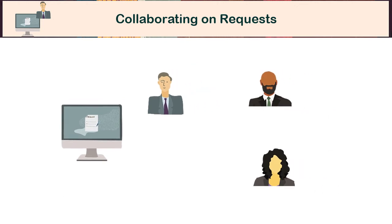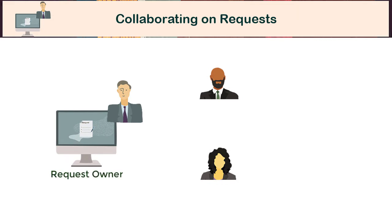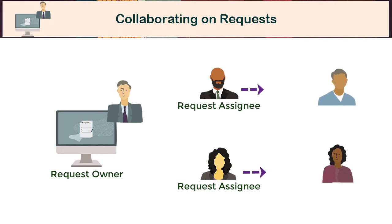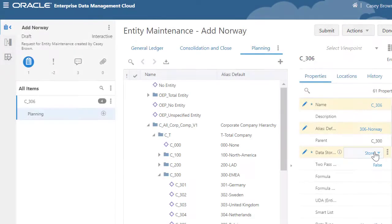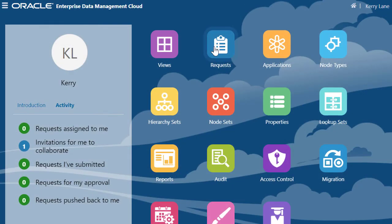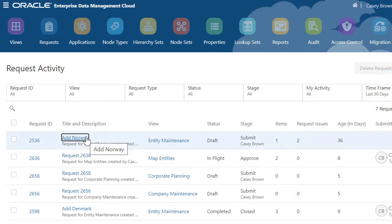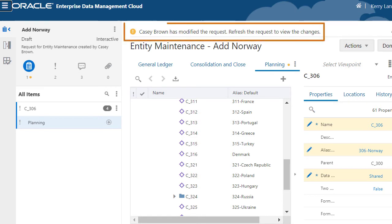While only the request owner can submit requests for approval, a request assignee can invite all the users needed to collaborate on a request. As collaborators co-author the same request in real time, their peers receive alerts notifying them of changes.